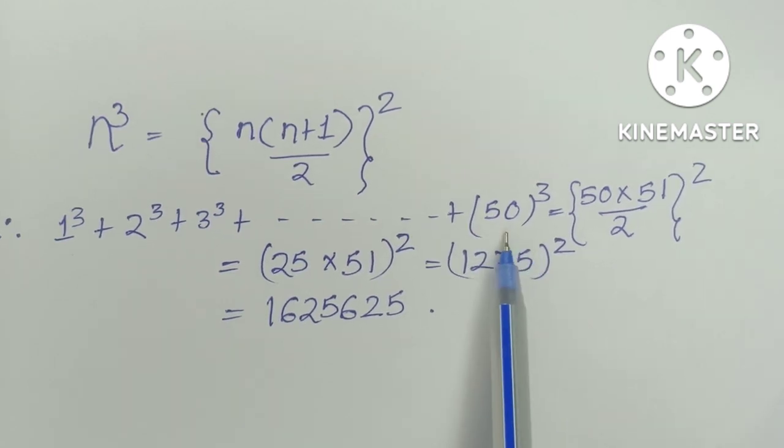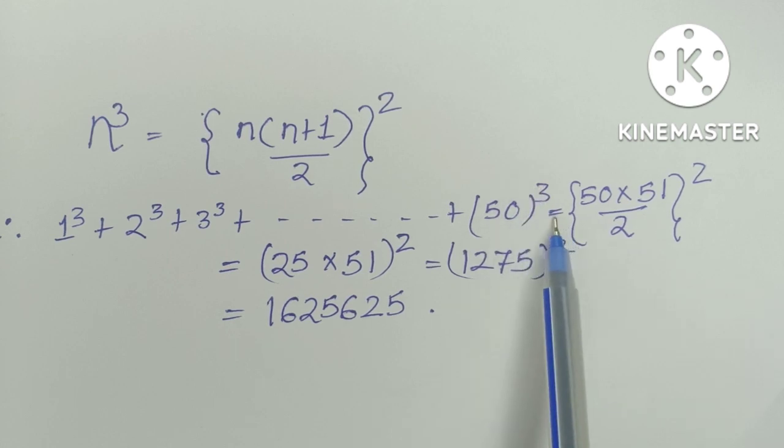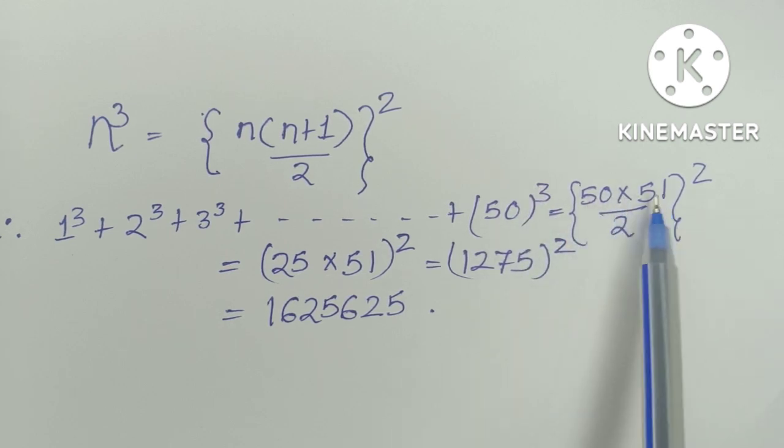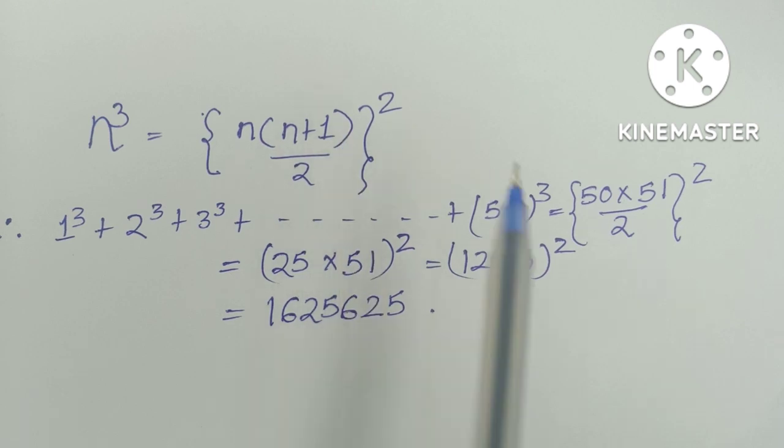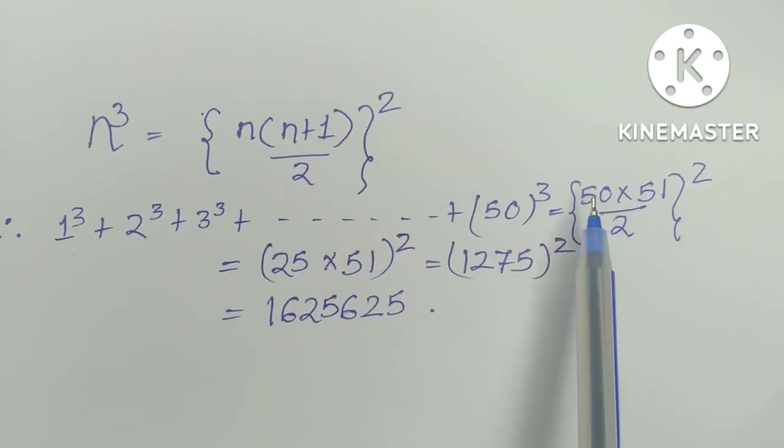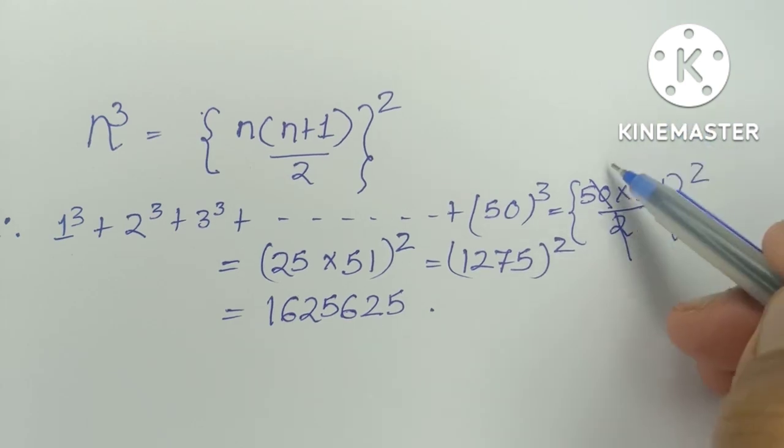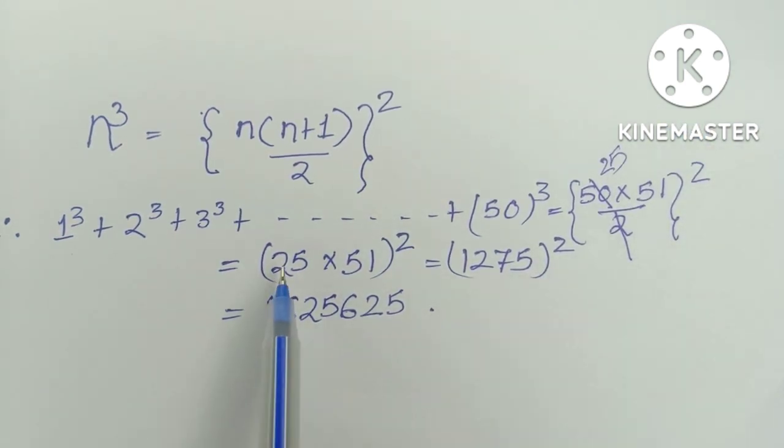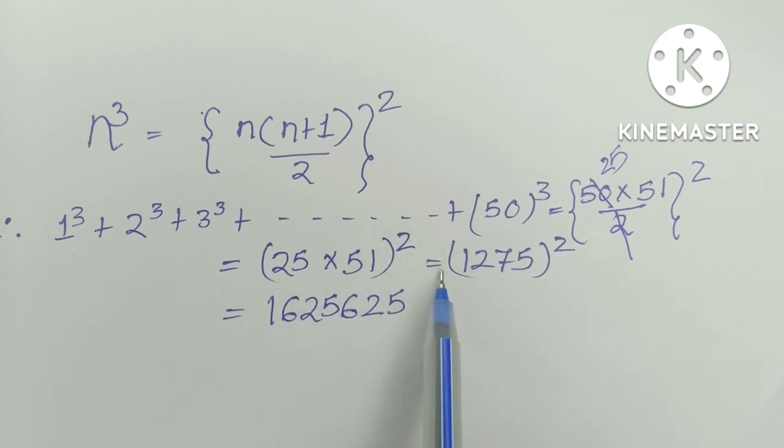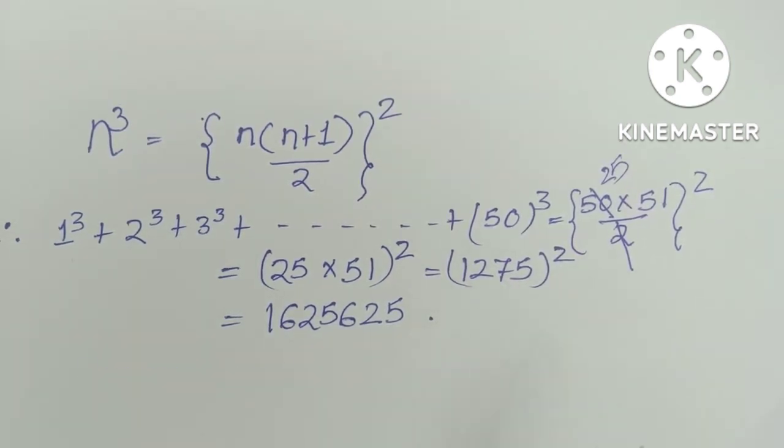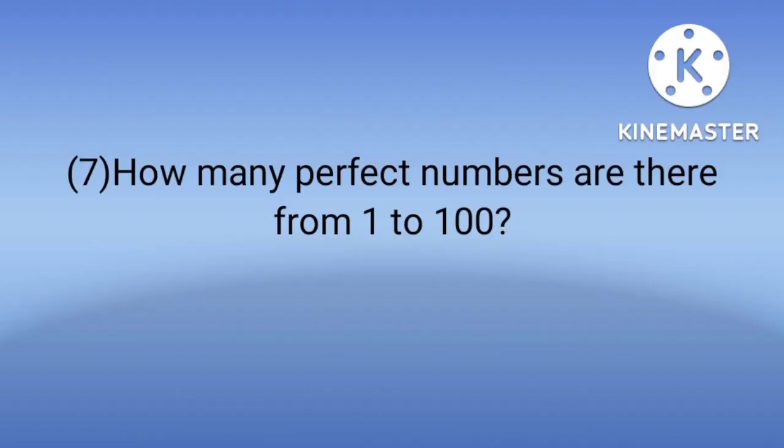So our N is 50. Then 50 cube equals 50 into 51 - this 51 comes from N plus 1, which is 50 plus 1 equals 51. So 50 into 51 by 2 whole square. Then we divide 50 by 2 to get 25. Then 25 into 51 whole square equals 25 times 51 is 1275, then whole square. So 1275 whole square is 1625625.